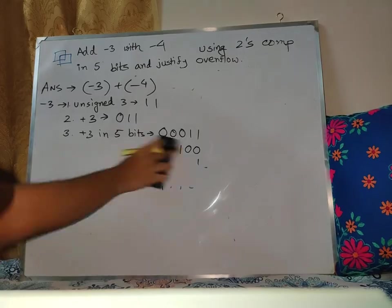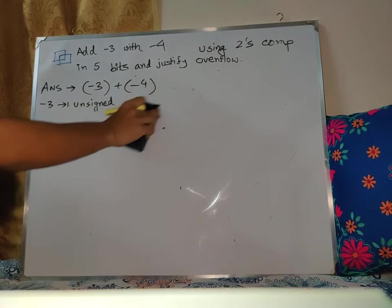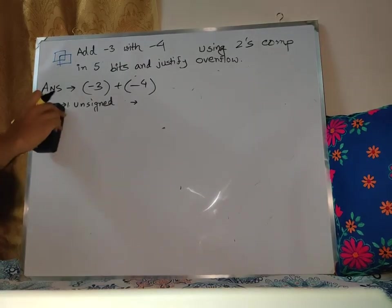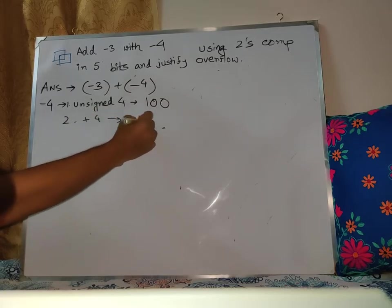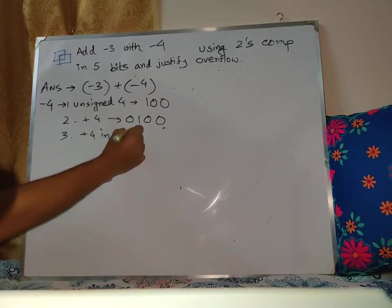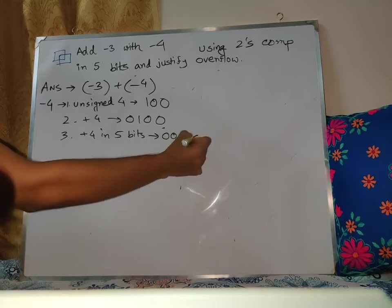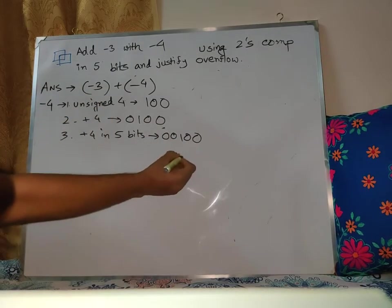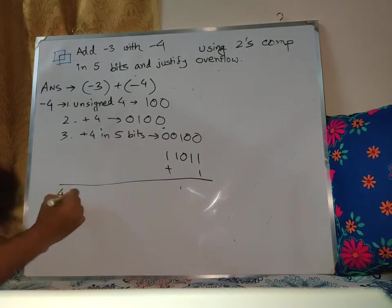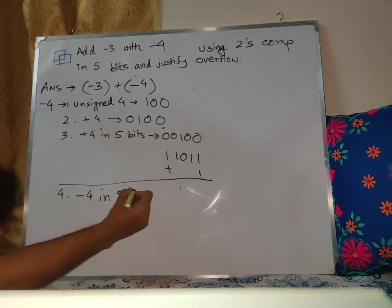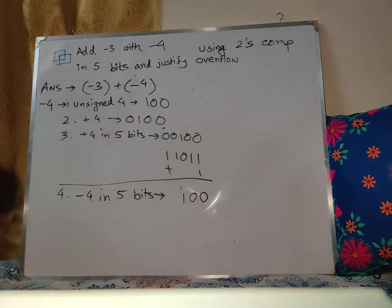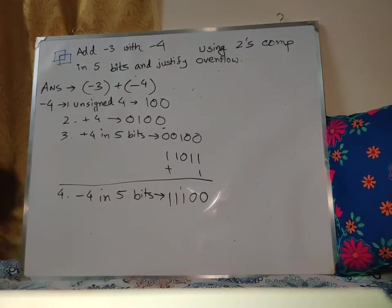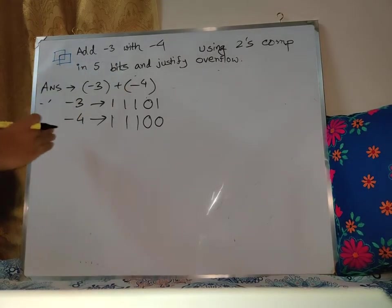Alright, so now I'm going to show you 4 in 5 bits: 0, 0, 1, 0, 0. Then for minus 4 in 5 bits, I'm going to use 2's complement. So minus 4 in 5 bits is 1, 1, 1, 0, 0.